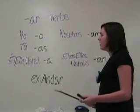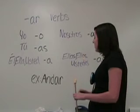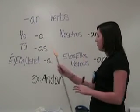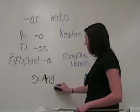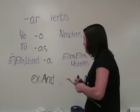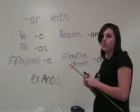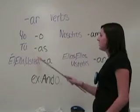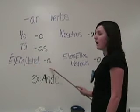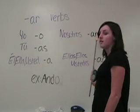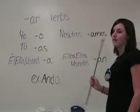Let's do an example. The verb andar, which means to walk. If you wanted to conjugate andar in the yo form, you chop off the AR and add an O. So it would be yo ando. The other ones would be: tú andas, él, ella, usted anda, nosotros andamos, and ellas, ellos, ustedes andan.